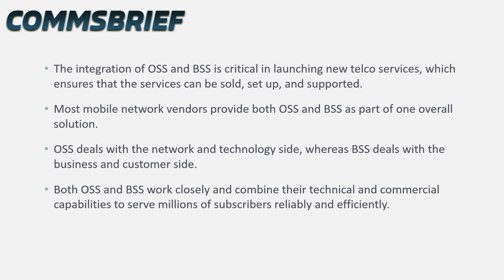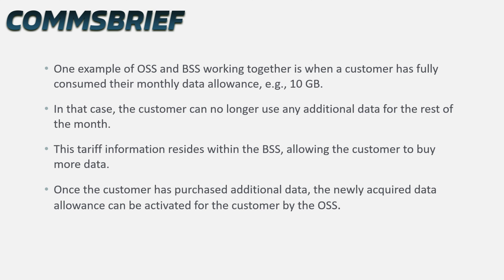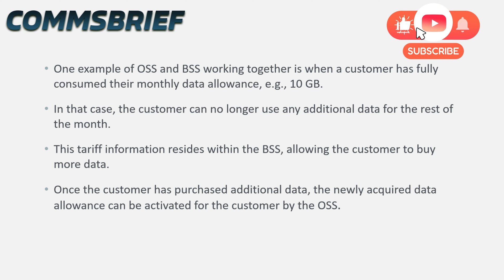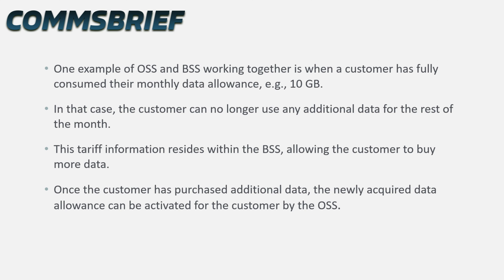OSS deals with the network and technology side, whereas BSS deals with the business side. Both work closely, combining their technical and commercial capabilities to serve millions of subscribers reliably and efficiently. One example of OSS and BSS working together: when a customer has fully consumed their 10 GB mobile data allowance, the tariff information resides within the BSS, allowing the customer to buy more data. Once the customer purchases additional data, the newly acquired allowance is activated for the customer by the OSS.